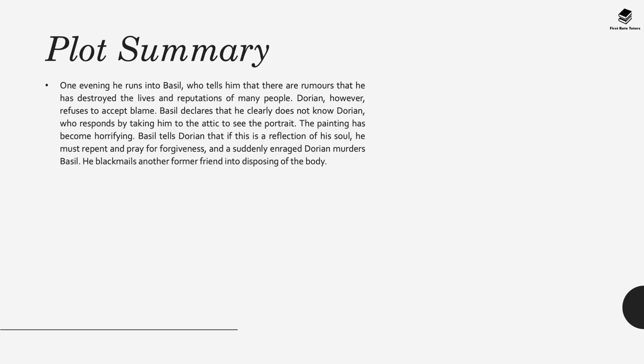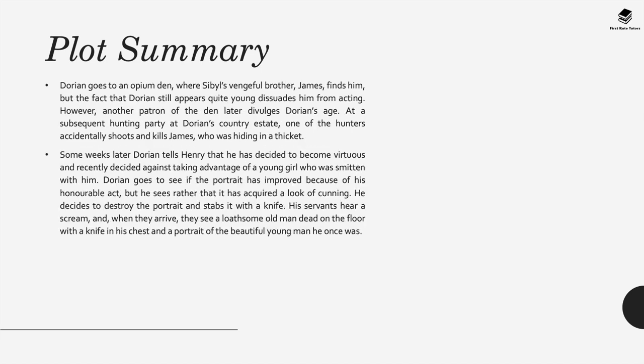One evening Dorian runs into Basil several years later, and Basil tells him that there are rumours he's destroyed the lives and reputations of many people. Dorian refuses to accept any blame, and Basil declares he doesn't really know Dorian, who responds by taking him to the attic to see the portrait Basil had created. The painting has become horrifying, and Basil tells Dorian that if this is a reflection of his soul he must repent and pray for forgiveness. A suddenly enraged Dorian murders Basil. Dorian then blackmails another friend into disposing of the body.